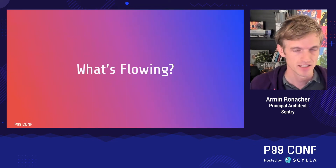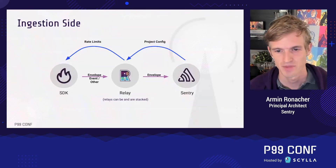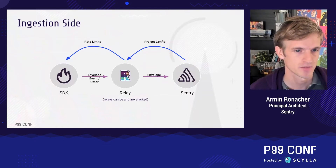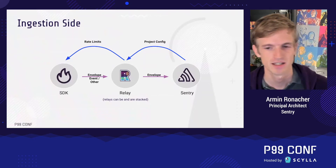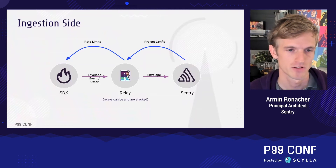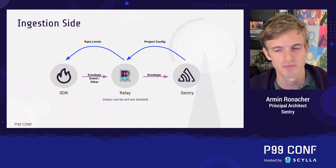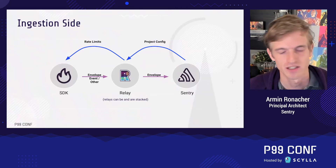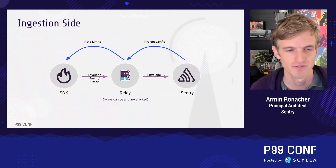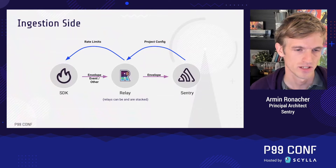We have two classes of formats coming in from SDKs. The preferred format is what we call an envelope — a format we created that wraps different types of data, so one HTTP request can contain different crash reports, a crash report with a memory dump, attachments, session updates, and so on. We also directly accept native formats like mini dumps or Unreal crash reports at dedicated endpoints. As soon as data hits a relay, it transforms it into an envelope and sends it onward, and these relays can be stacked.